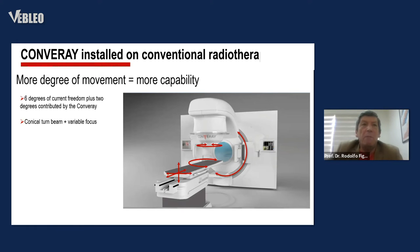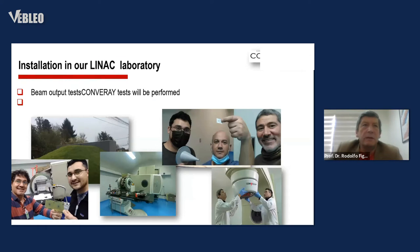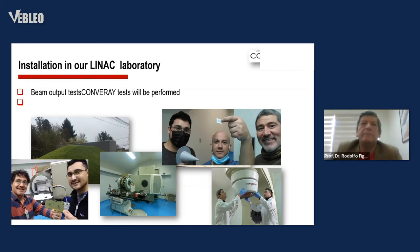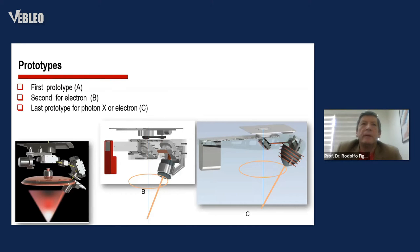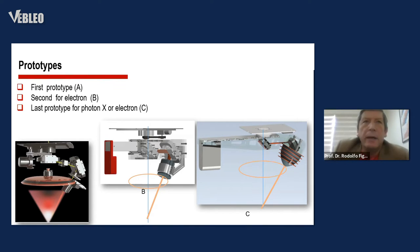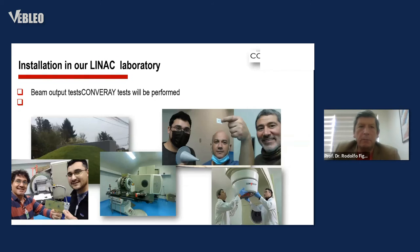Conical turning beam plus variable focus. Convergent and over-convergent modes. Our results — this Conver-ray device — were performed by our team in our laboratory. Different prototypes: first prototype A, second prototype B, and last prototype — electron beam — prototype C.